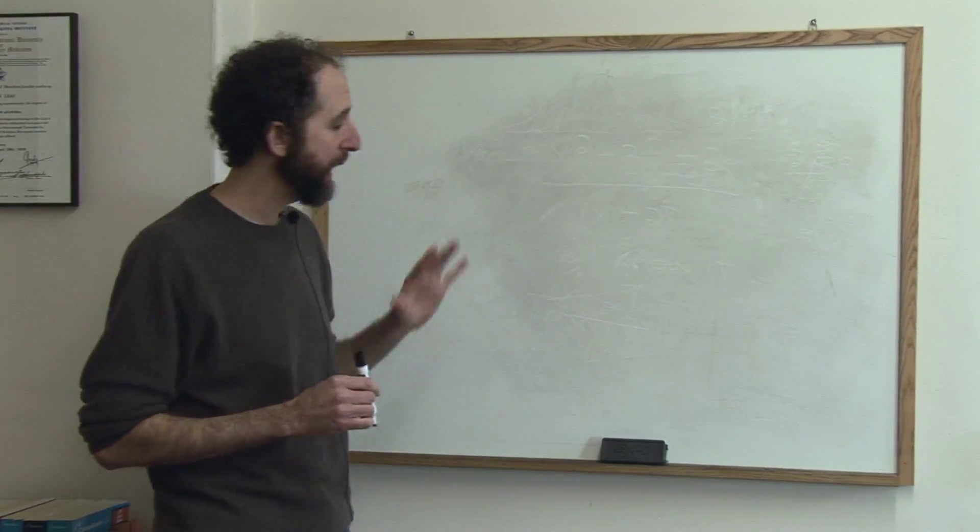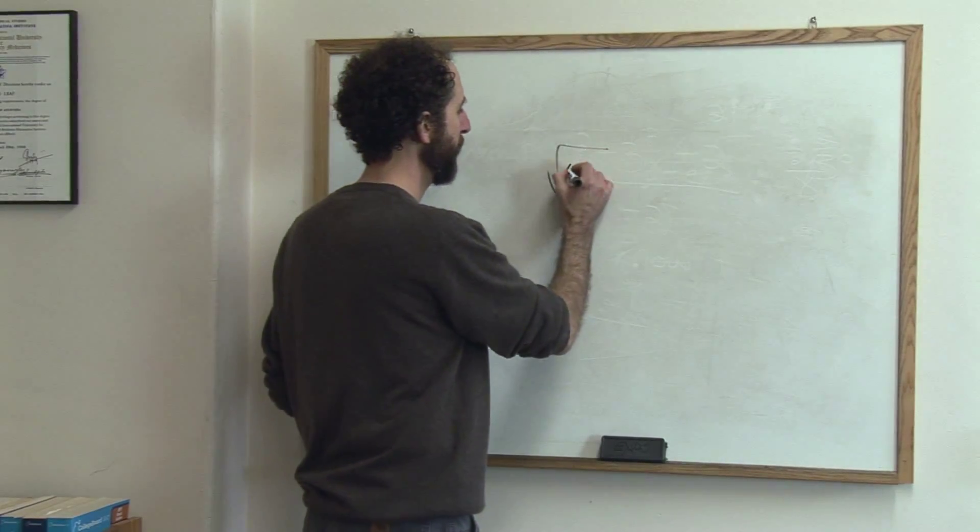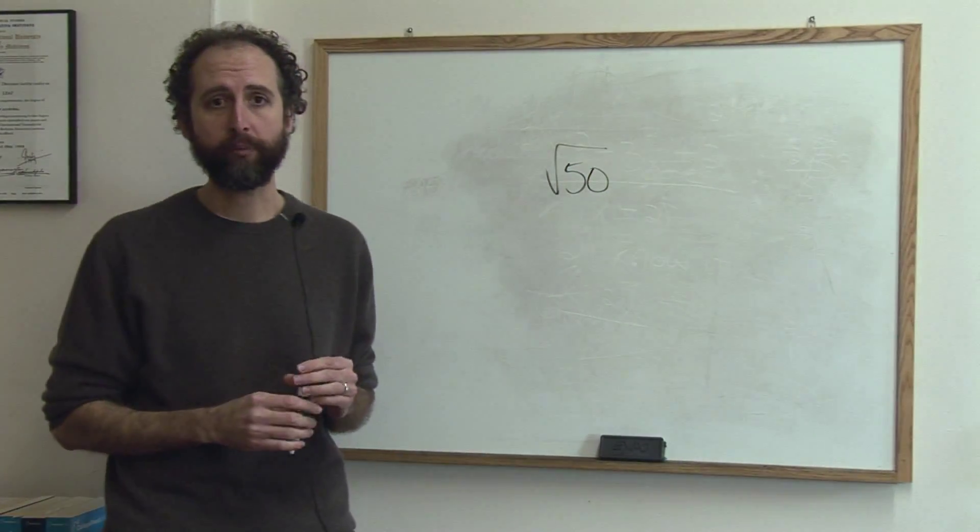Let's look at simplifying roots. Anytime you're dealing with a question, what that means is, let's say you have square root of 50 and you're not allowed to use your calculator on a test.